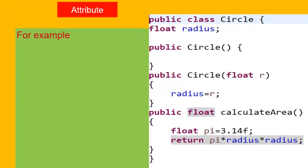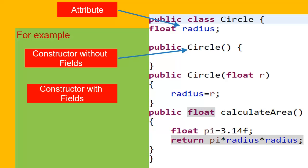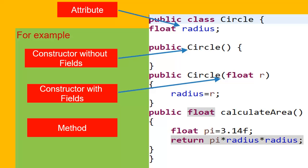Let us consider an example. Here we have a class Circle with an attribute radius and a method calculateArea. There are two constructors here — one is an empty constructor, meaning it does not have any argument, and the other one has one argument.